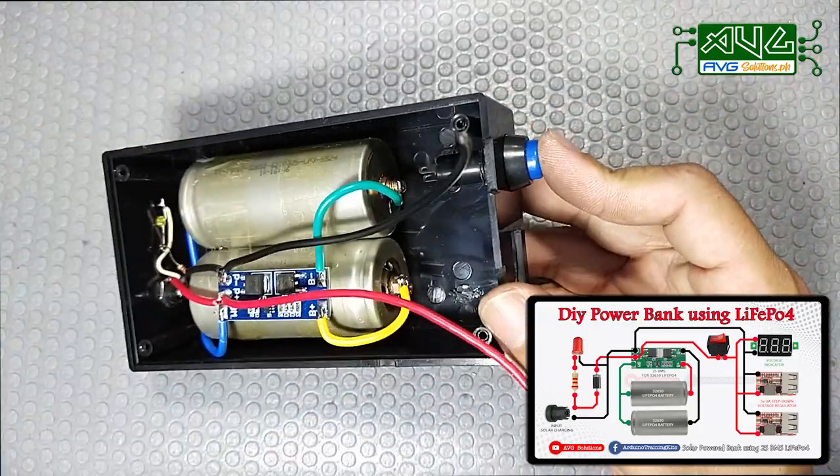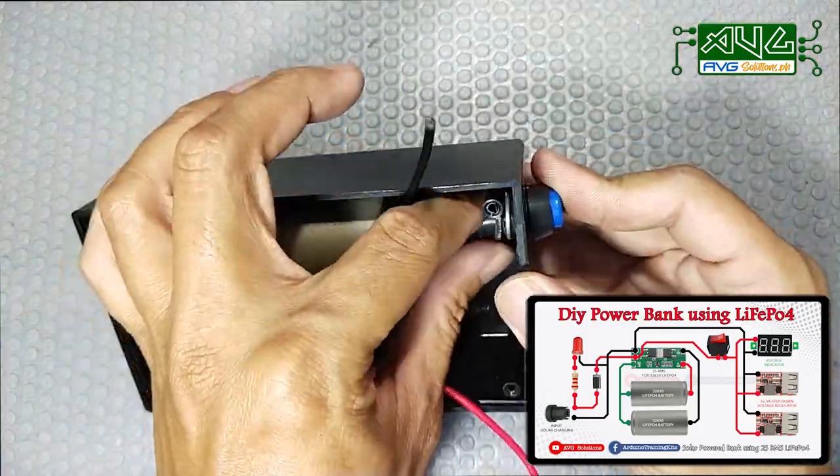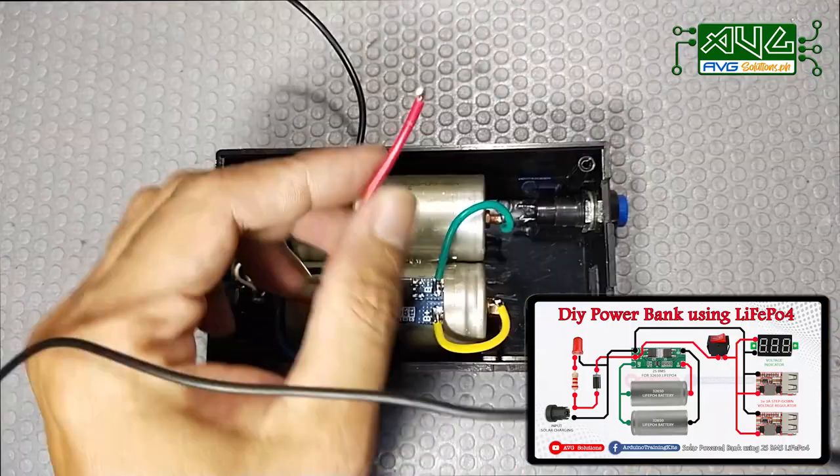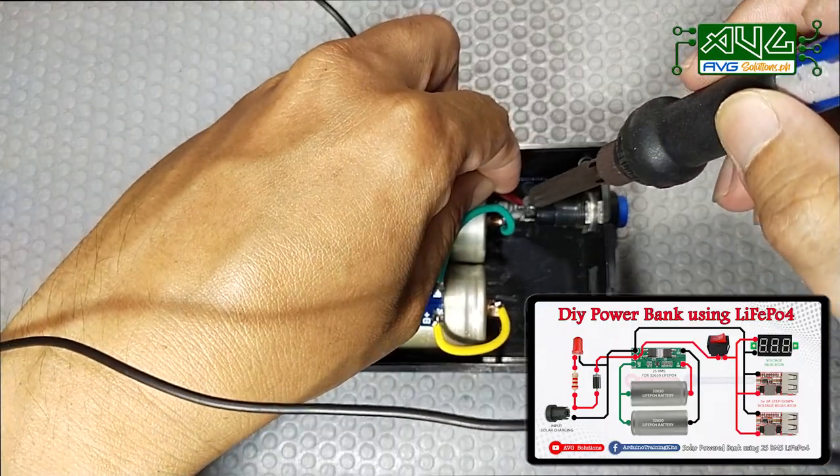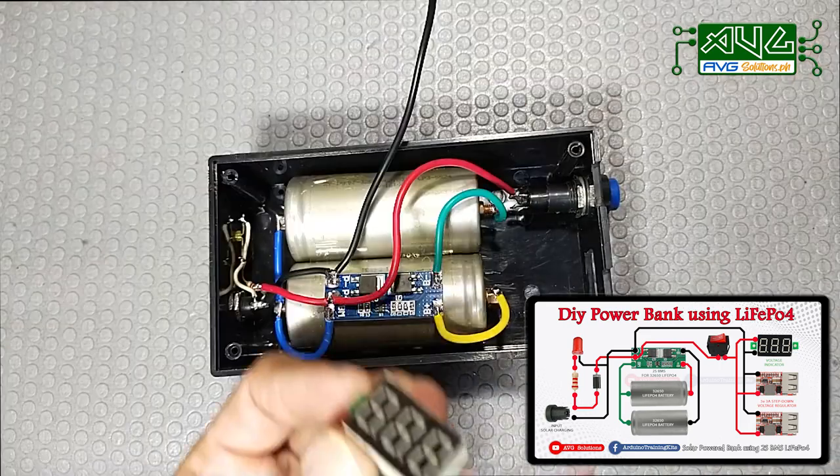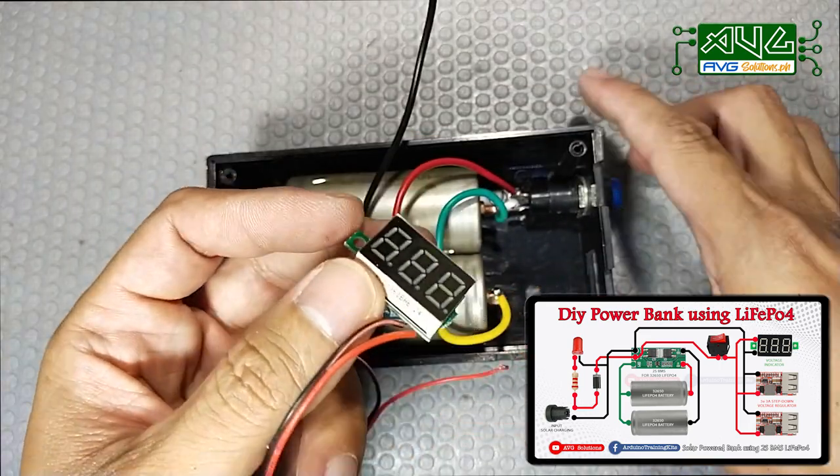Power switch. Connect natin yung positive line sa power switch. Install na rin natin yung voltage indicator.